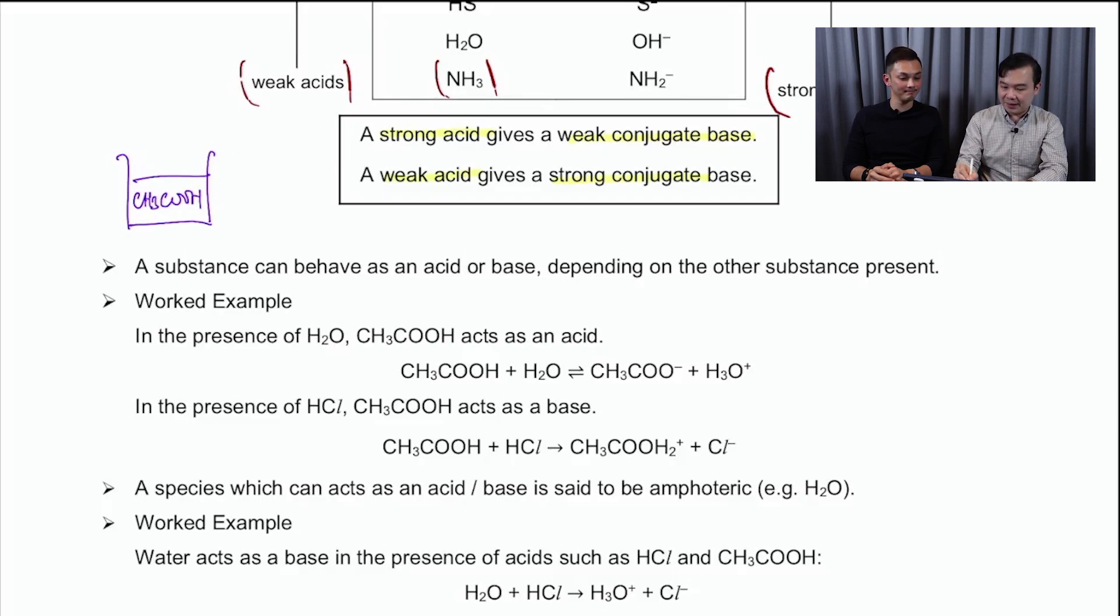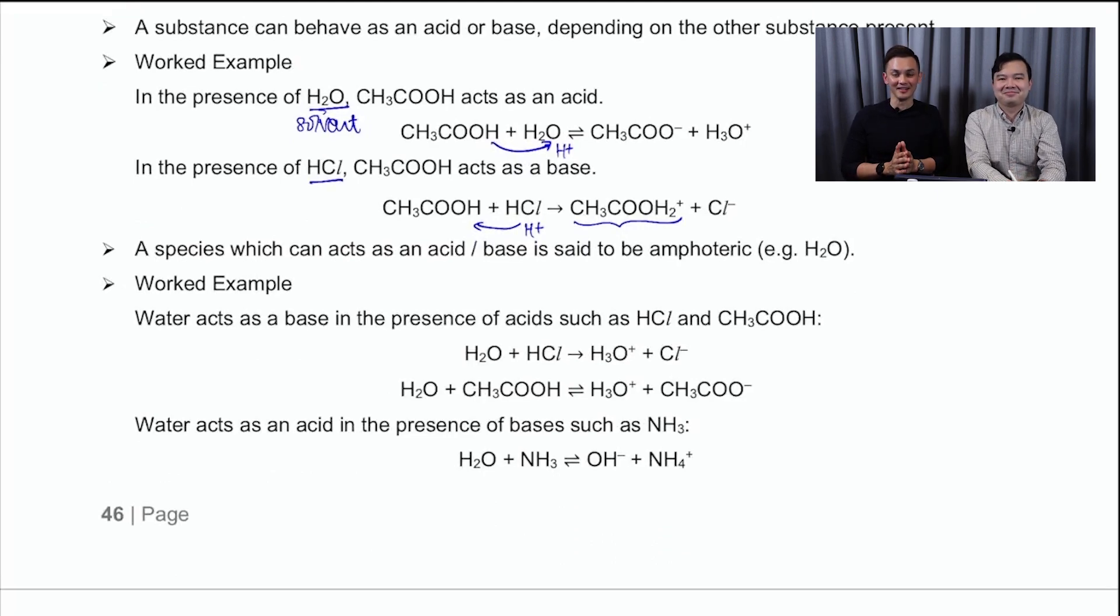And as you go all the way down in the table, you'll realize that ammonia, usually we will say that ammonia is a base, but actually it can be an acid, just that it's a very weak acid. So as a very weak acid, what happens is you will give rise to a very strong conjugate base. So Mr Leong, you see that there's actually a relationship between them. So if I zoom into the box over here, you'll notice that if you start off with a strong acid, you will always end up with a weak conjugate base. And of course, the converse is true. If you start off with a weak acid, you're going to end up with a strong conjugate base.